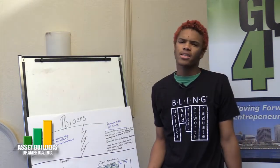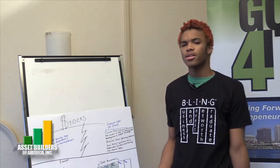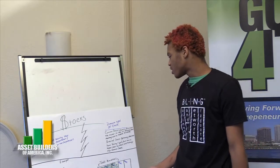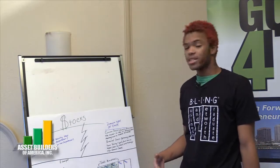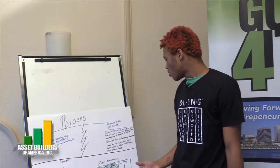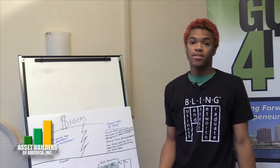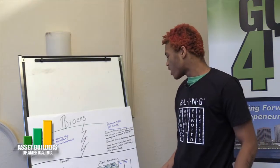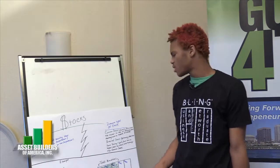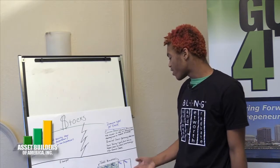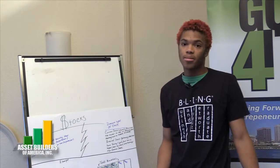There are different types of stock: common stock and preferred stock. Common stock usually entitles the owner to vote at shareholders' meetings and receive dividends. Preferred stock generally does not have voting rights, but on the other hand, it has a higher claim on assets and earnings than common shares.